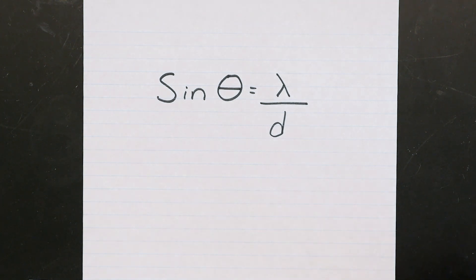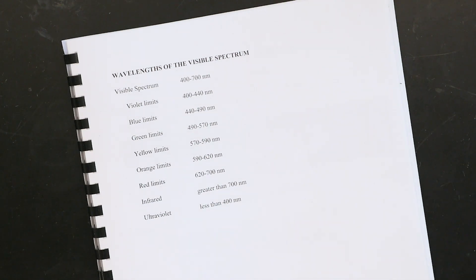Next, convert all of your measured diffraction angles to photon wavelengths. You'll use the D value you previously determined along with this relationship. Double-check that the wavelengths you calculate correspond to the colors you observed by using the table available in your lab manual.